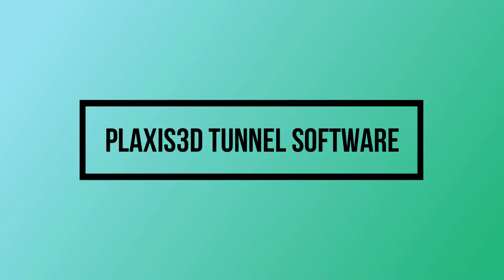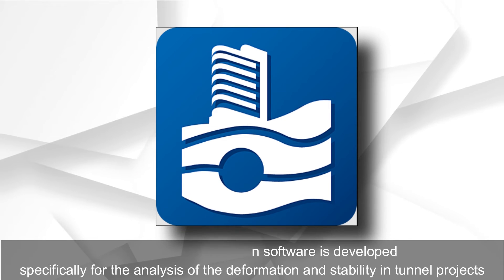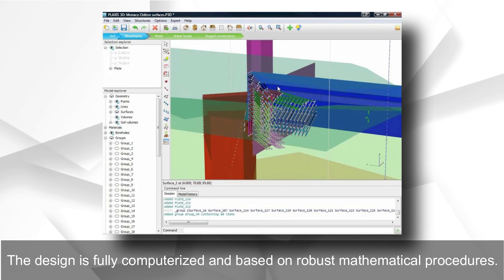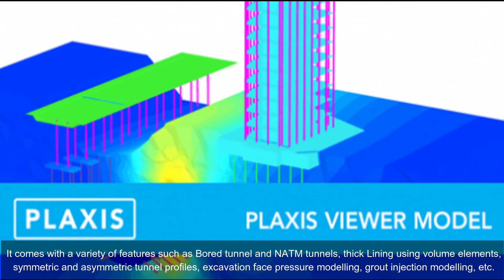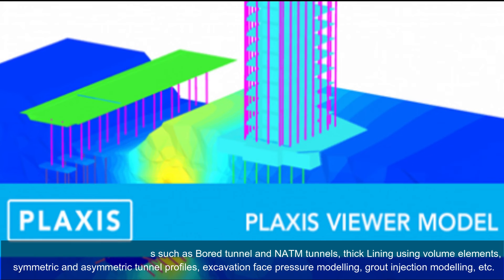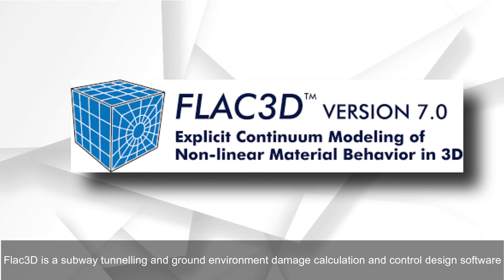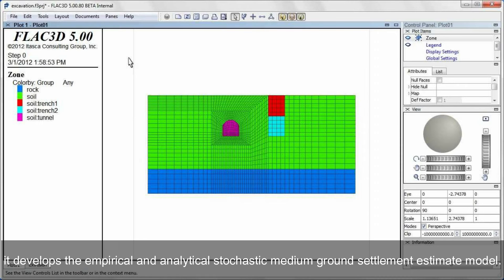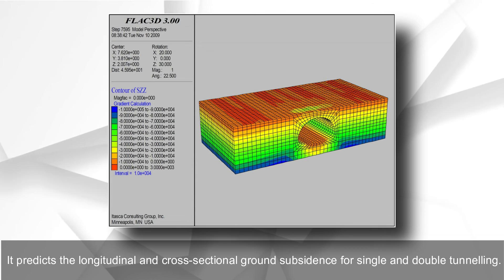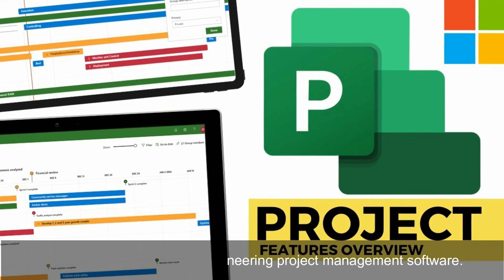Tunnel design software: Plaxis 3D tunnel design software is developed specifically for the analysis of deformation and stability in tunnel projects. The design is fully computerized and based on robust mathematical procedures. It comes with a variety of features such as bored tunnel and NATM tunnels, lining using volume elements, symmetric and asymmetric tunnel profiles, excavation phase pressure modeling, and grout injection modeling. Plaxis 3D is also a subway tunneling and ground environment damage calculation and control design software, developing empirical and analytical stochastic medium ground settlement estimate models to predict longitudinal and cross-sectional ground subsidence for single and double tunneling.